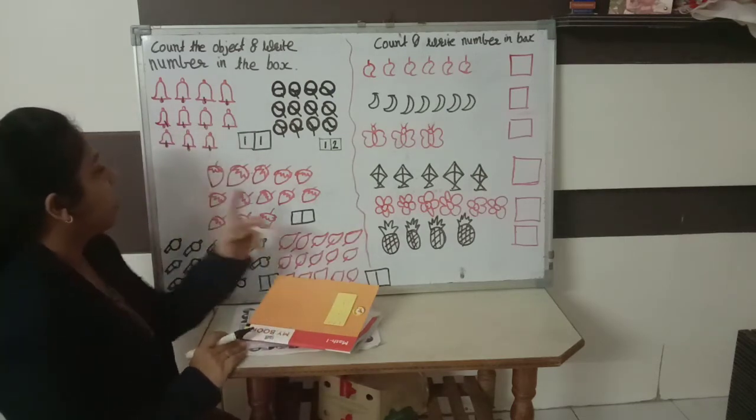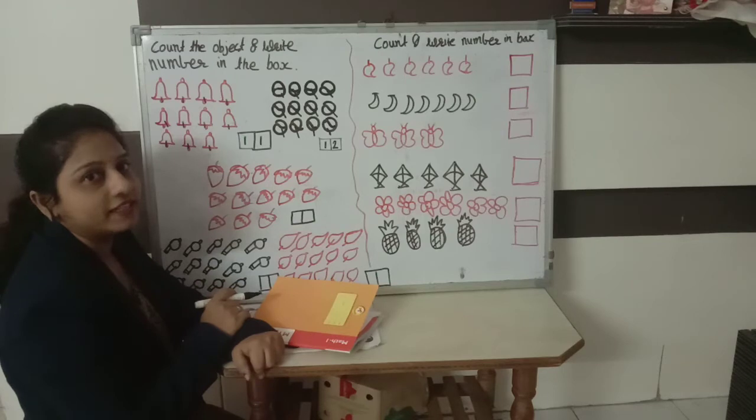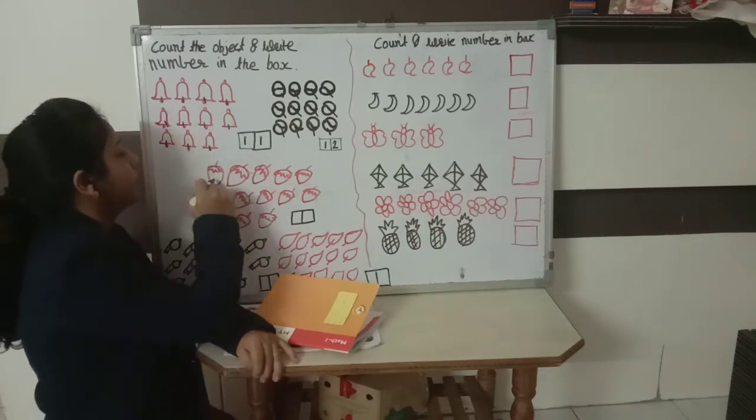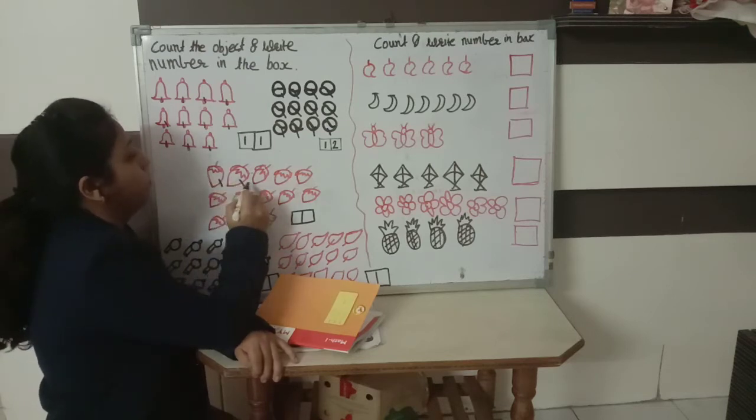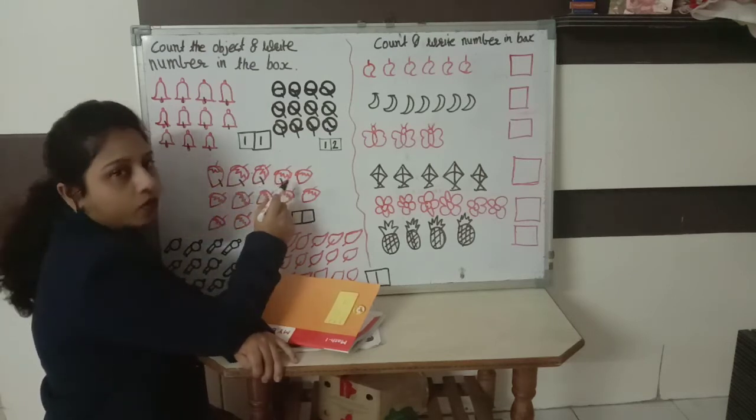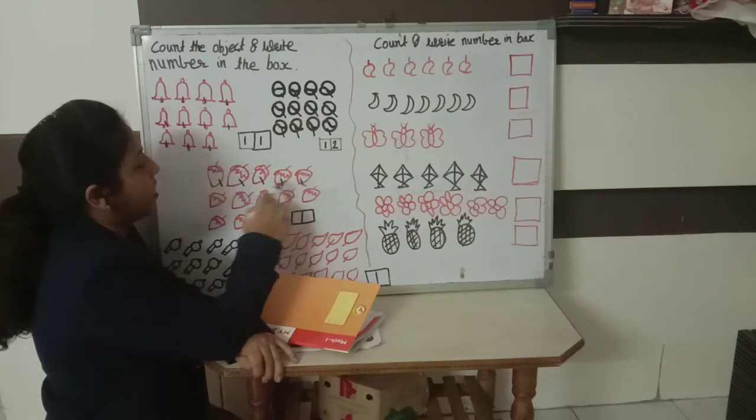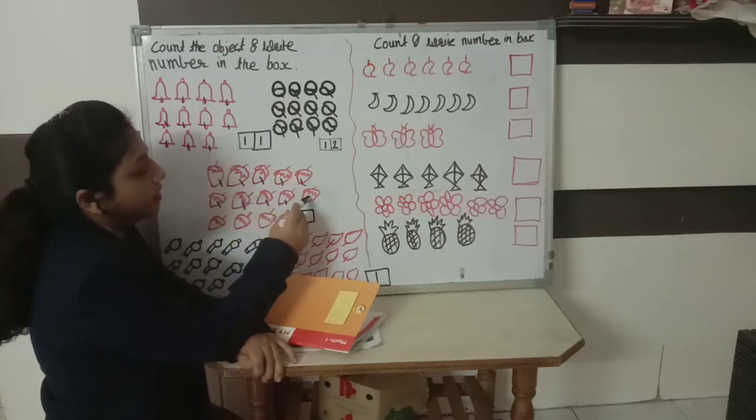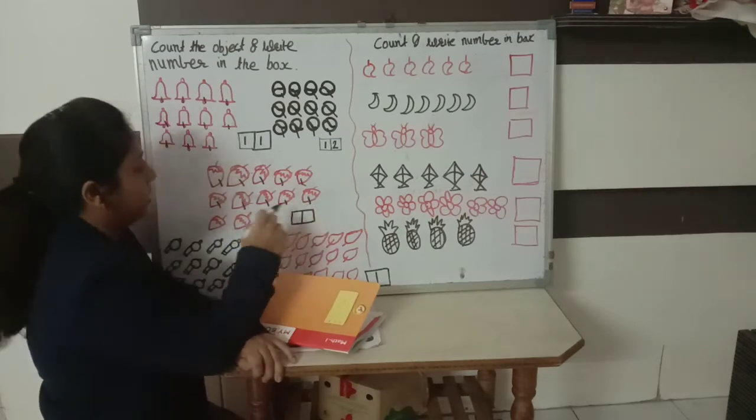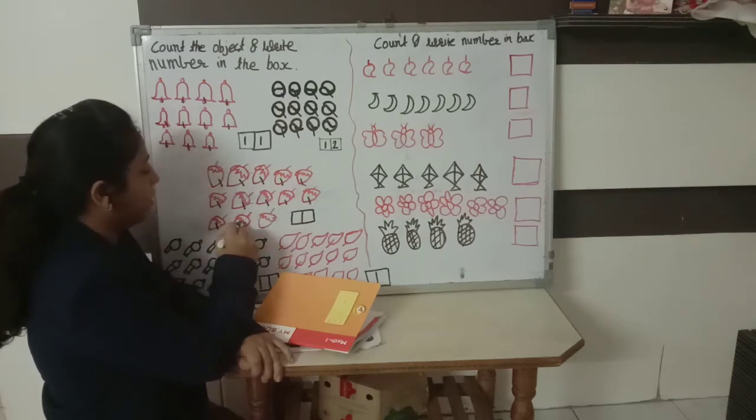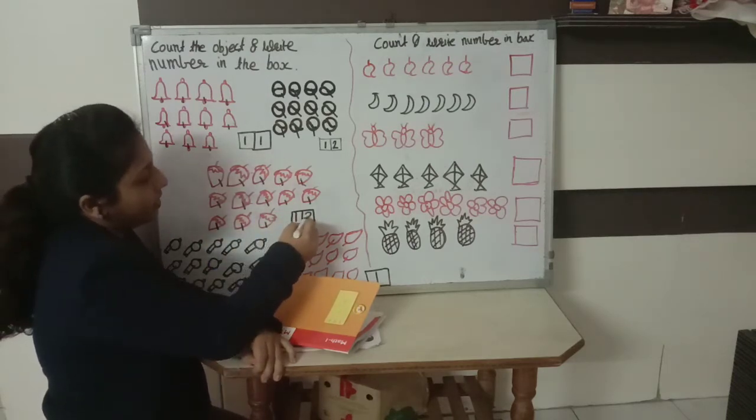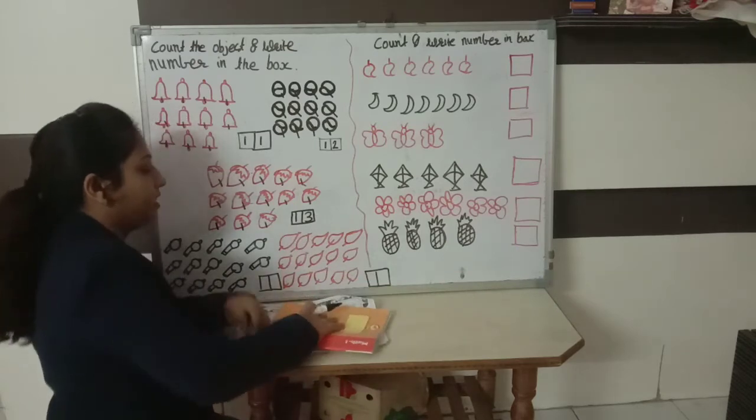Now what are these? These are strawberries. Yes, yummy. Let's count. How many strawberries are here? 1, 2, 3, 4, then 5, 6, 7, 8, 9 and 10, 11, 12 and 13. All right, how many strawberries are here? 13. Yes.